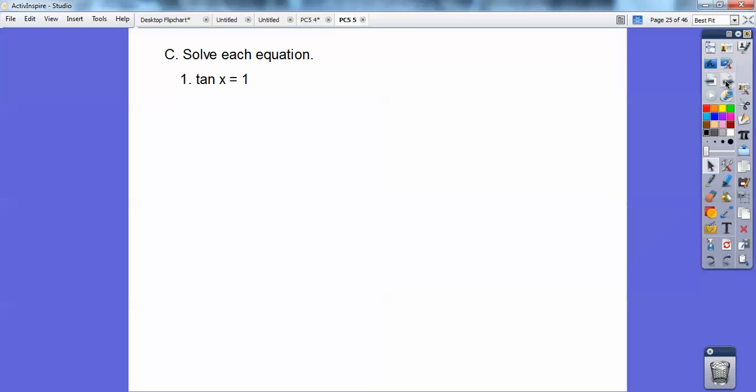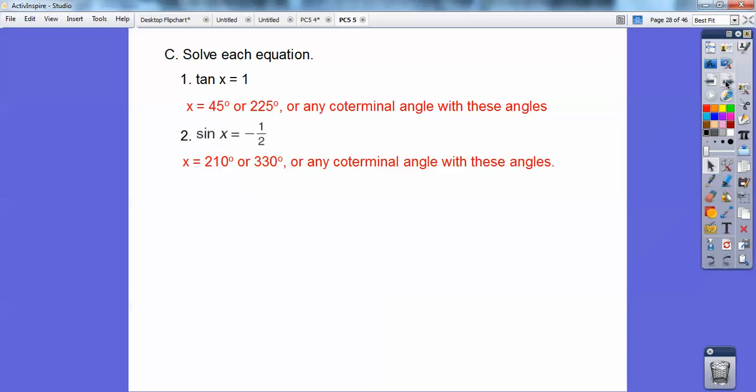So solve this. Tangent of what equals 1? Tangent's positive in quadrants 1 and quadrants 3, so tangent will equal 1 at 45 degrees and 225 degrees, which is the reference angle of 45 degrees off the X-axis. So how about this? Sine's negative in quadrants 3 and 4, so negative 1 half, that's 30 degrees off the X-axis, so I get 210 or 330. 30 degrees off the X-axis in quadrants 3 and 4 gives me 210.